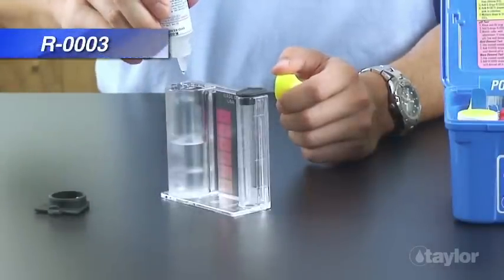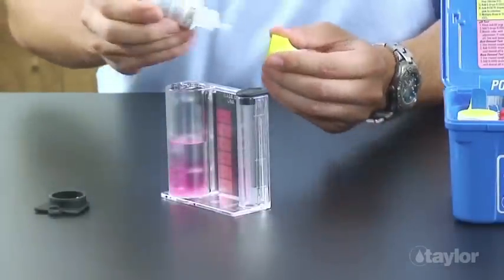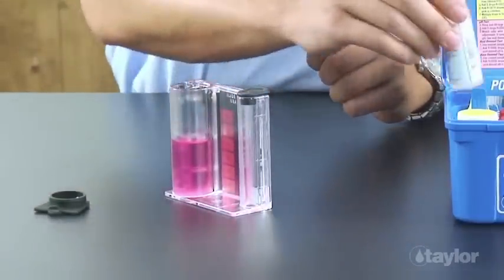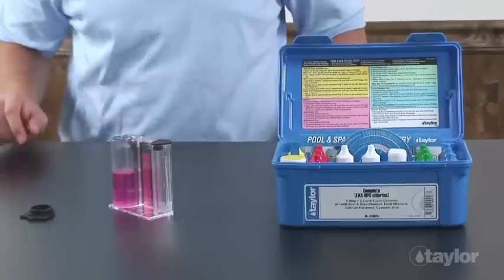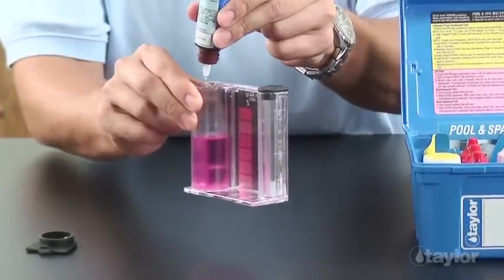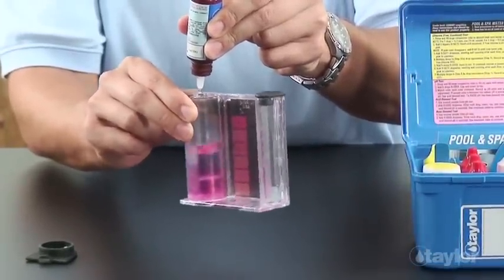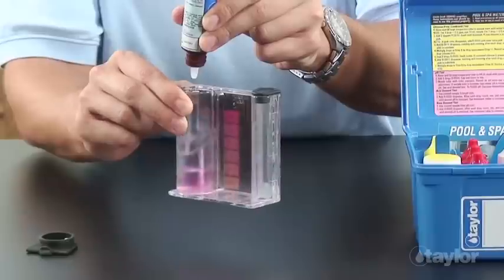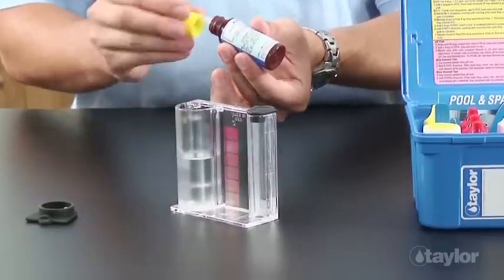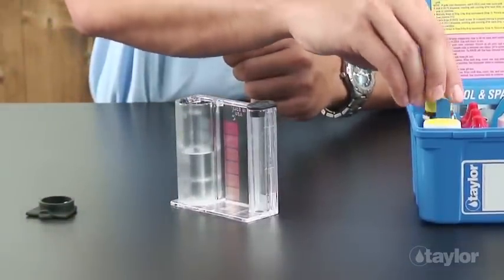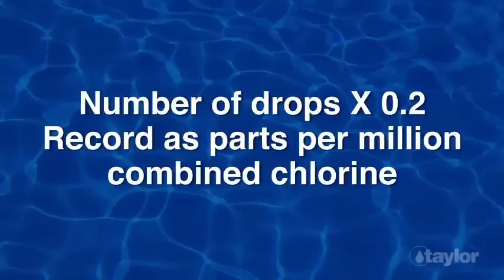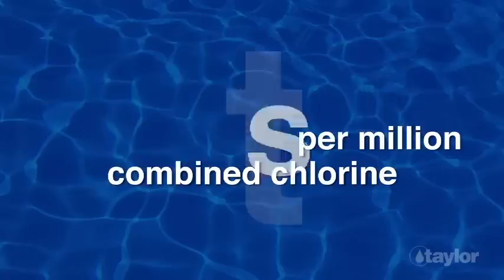Add five drops of reagent 3 and swirl to mix. If combined chlorine is present, the sample will turn pink. Add FAS-DPD titrating reagent for chlorine drop-wise, swirling and counting after each drop until the sample goes from pink to colorless. Add one more drop of titrant after the endpoint to be certain the color change is permanent. If the color remains unchanged, do not count this drop. Multiply the drops expended by 0.2 and record as parts per million combined chlorine.